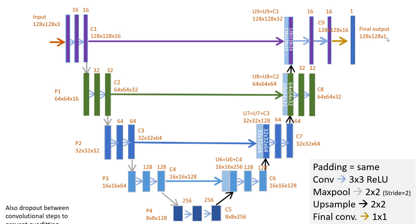The final output is 128 by 128 by 1. In between the convolutional steps, we apply dropout — randomly dropping about 10% of pixels from calculations. This is typically used to prevent overfitting.